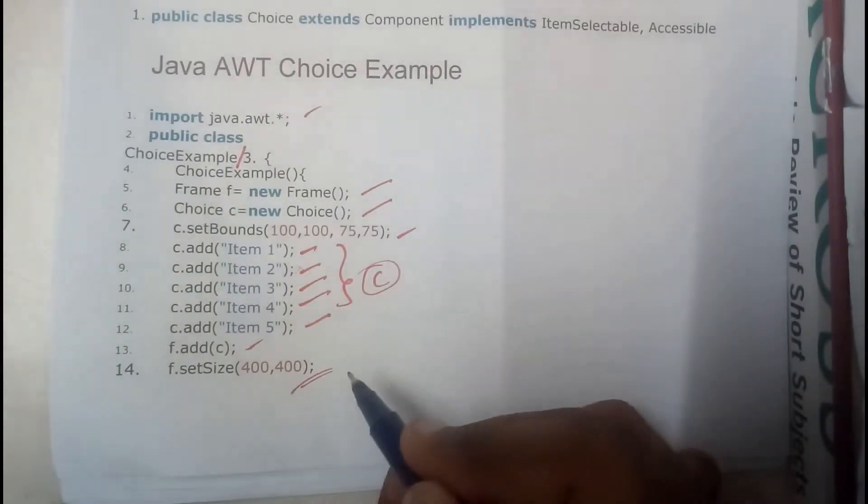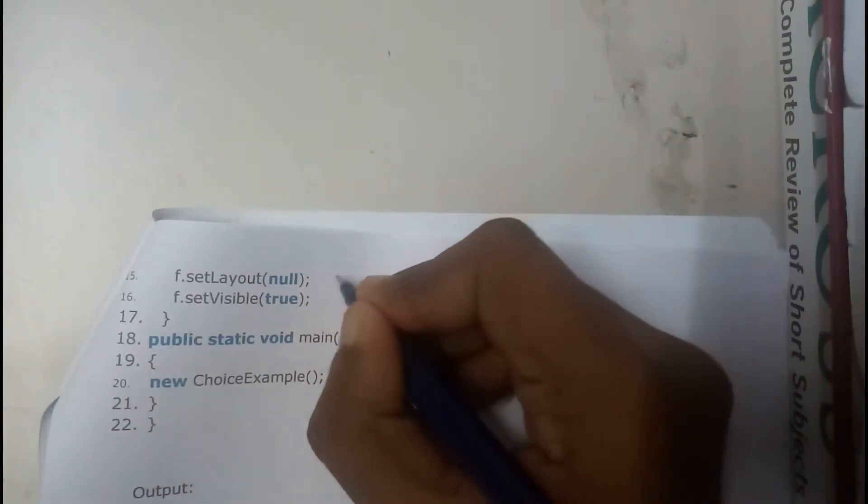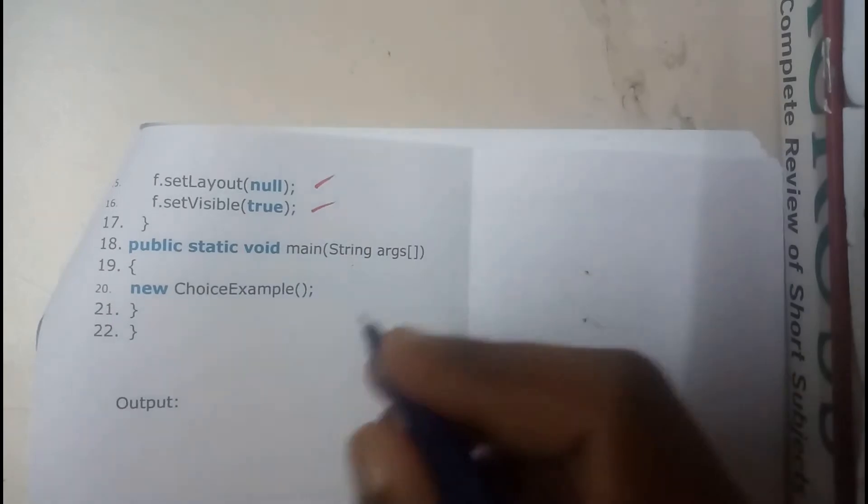We set the frame size to 400 by 400, set the layout to null, and the visibility to true. Then we write our public static void main where we create the instance of that object.